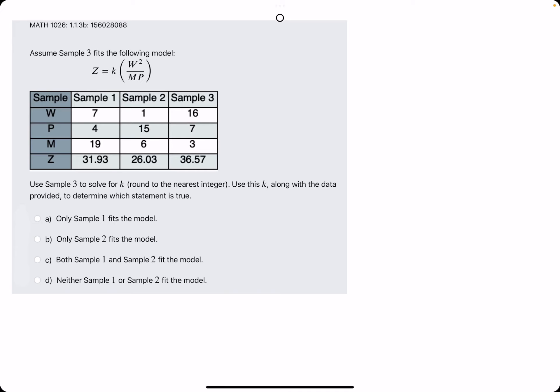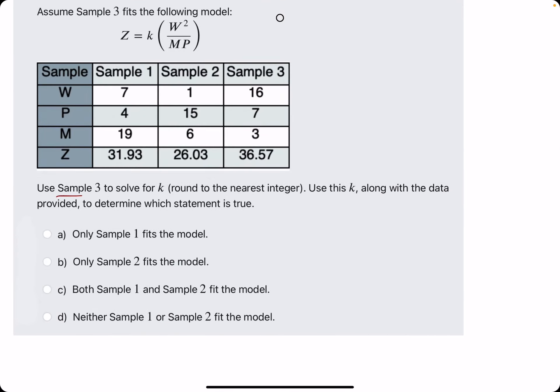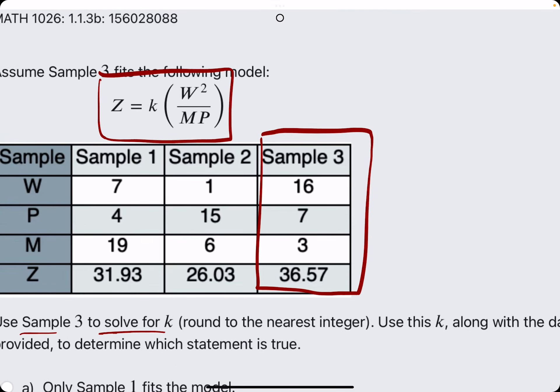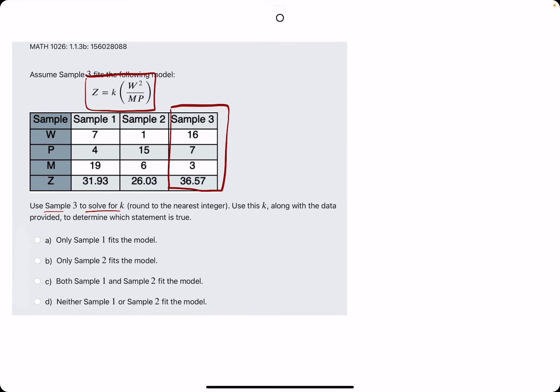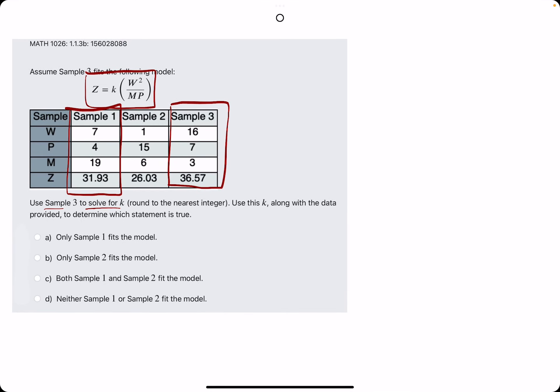And the goal is to first solve for k using Sample 3. So they say, use Sample 3 to solve for k. So we're first focused on these values here. We're going to plug them into this equation to solve for k. Once we have k, we will test out that k value with the equation with Sample 1's values, see if everything is consistent. And then we'll do the same thing for Sample 2.